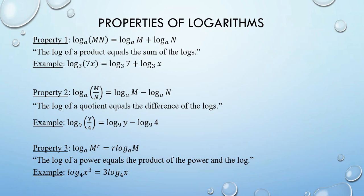There are also some cool properties which log functions possess. Property 1: if you're taking the log of a product, you can split it up as the sum of two individual logs — the log of a product equals the sum of the logs. We call this the product property. For example, log base 3 of 7x equals log base 3 of 7 plus log base 3 of x. Multiplication becomes addition among separate logs.